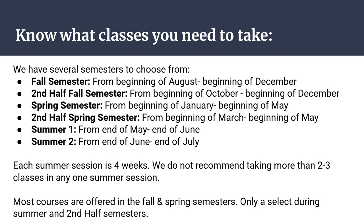Here's a breakdown of what our semesters look like. Our fall semester starts at the beginning of August and runs to the beginning of December — 15 weeks. Our spring semester runs from the beginning of January to the beginning of May — also 15 weeks. We also have second-half fall and second-half spring. The second-half fall starts in October and goes to December — eight weeks. Second-half spring starts at the beginning of March and goes till May — also eight weeks. You still get full credit for the course in both cases.